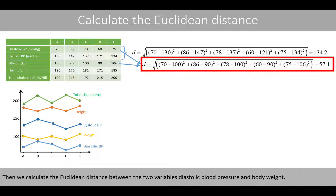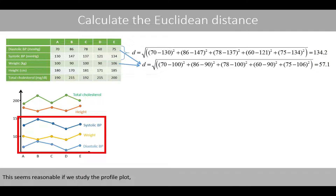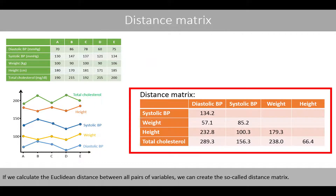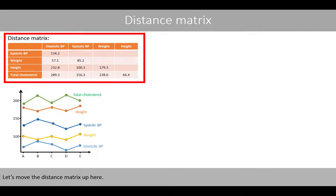Then we calculate the Euclidean distance between the two variables diastolic blood pressure and body weight. We see that the variable diastolic blood pressure has a shorter distance to the variable body weight compared to the systolic blood pressure. This seems reasonable if we study the profile plot, because the values of the diastolic blood pressure are closer to the values of the body weight. If we calculate the Euclidean distance between all pairs of variables, we can create the so-called distance matrix. For example, the Euclidean distance between the systolic blood pressure and the total cholesterol level is 156.3.